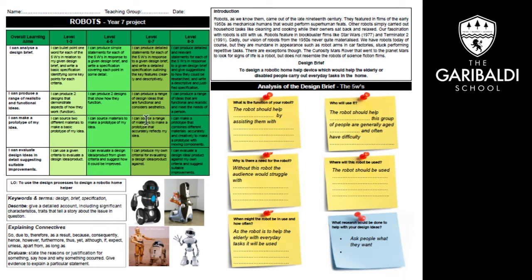As we look at this project, it's a robots project for year seven, and you'll notice that there are four tasks that need to be completed. You'll have seen this type of table in the classroom no doubt. Each of those tasks has a set type of thing that you need to be working towards, and they are leveled. The more work that you produce, the more detail and explanations in there, the higher level that you're going to get.